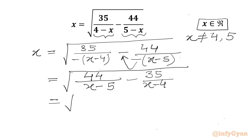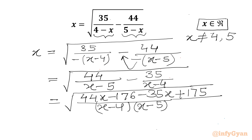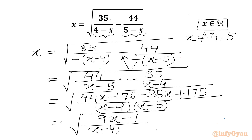Let us take the LCM. In the denominator it will be the product of (x minus 4) and (x minus 5). Writing out the numerator: 44x minus 176 minus 35x plus 175, so our numerator is 9x minus 1, and the denominator is (x minus 4)(x minus 5).